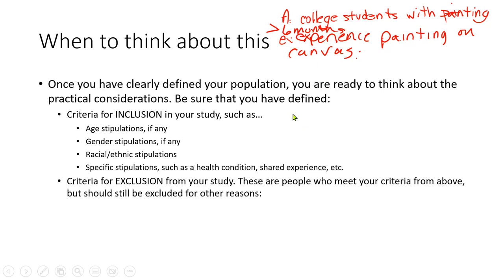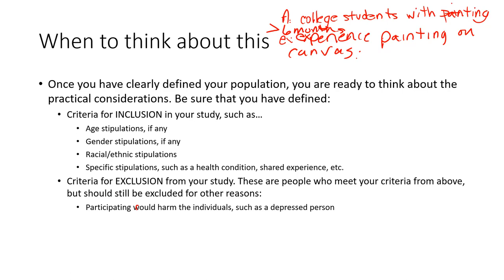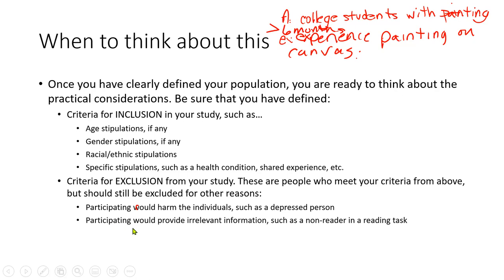For exclusion, there are reasons we exclude people from a study. If participating could harm individuals — for example, if you're studying breakups, do you want people who are depressed to participate? It might worsen their depression. So you might exclude people with depression. Or maybe participating would provide inaccurate information — like if someone is a non-reader and the task involves reading, you can't include them.